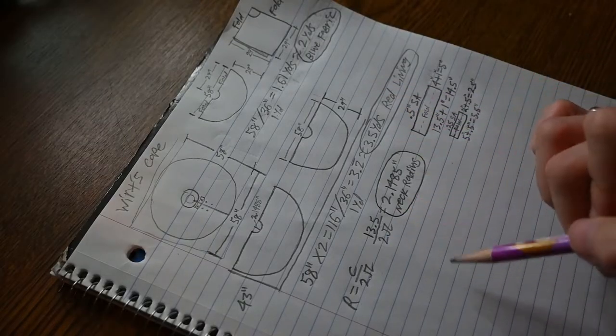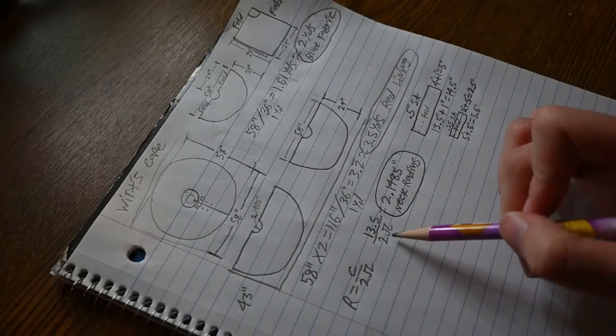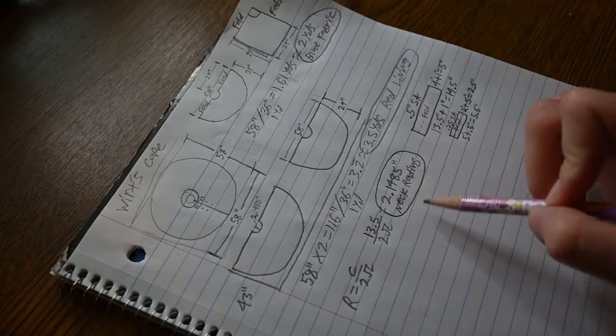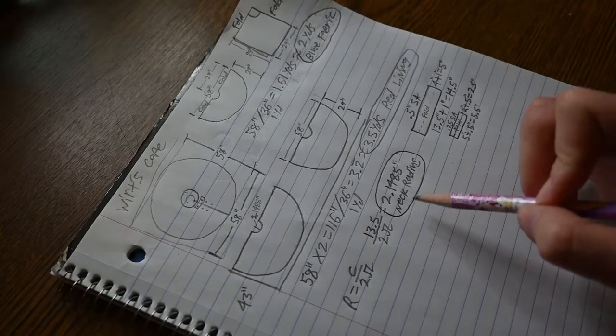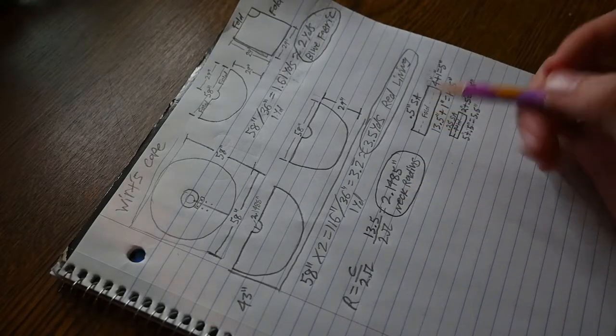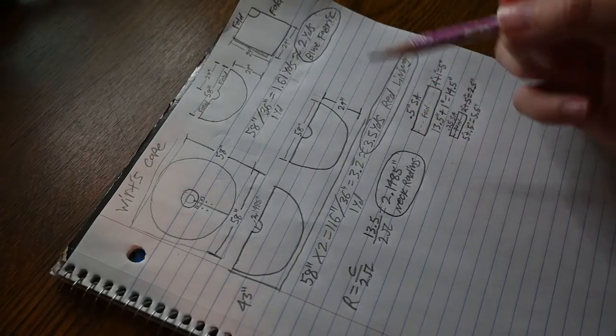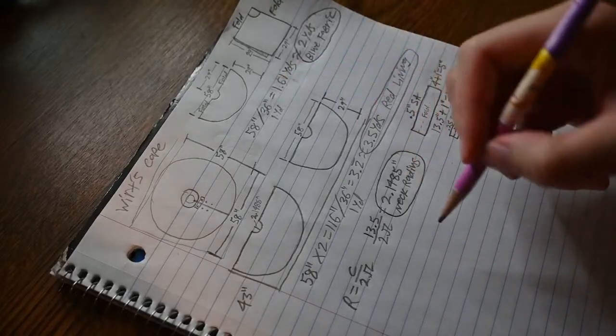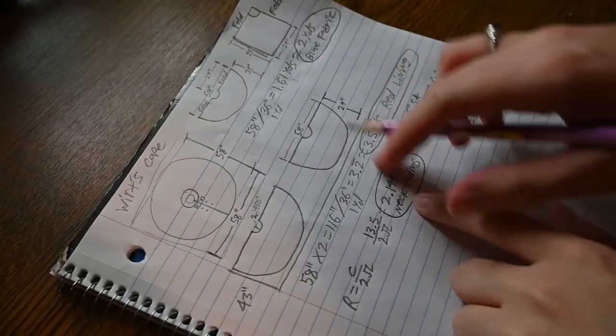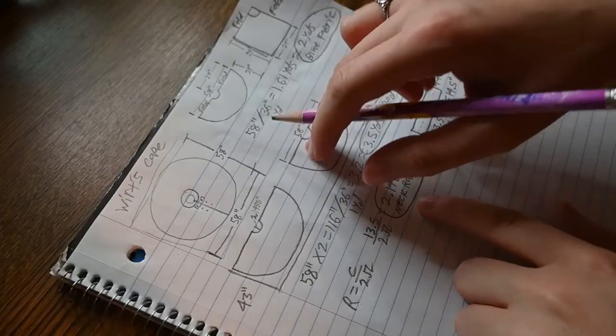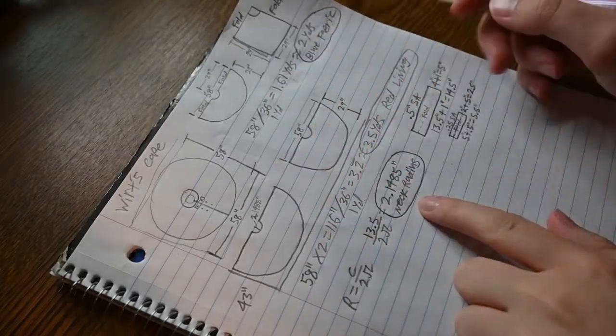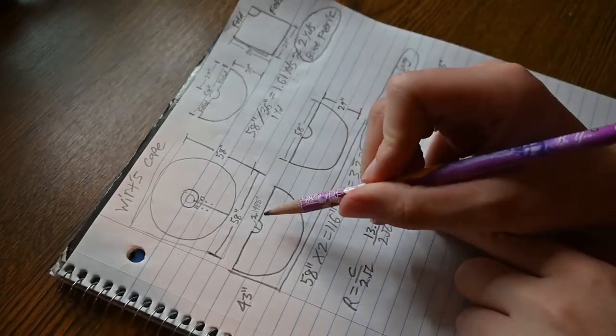So 13.5 inches divided by 2 pi, and that equaled out to a radius of just over 2 inches. Well, if you wanted to be more particular, because I am particular, 2.1485 inches. And so that was the measurement that I came out with when I made my own protractor around the neck area right there, so that way I can cut it out.